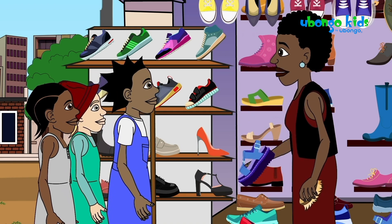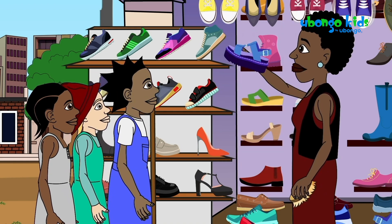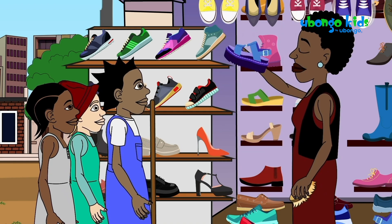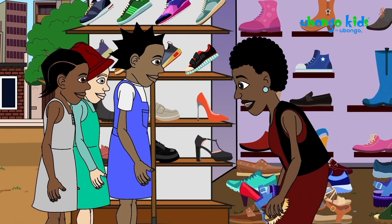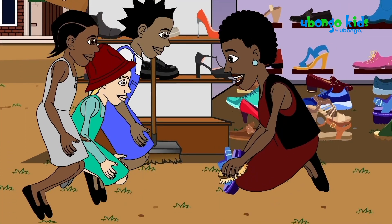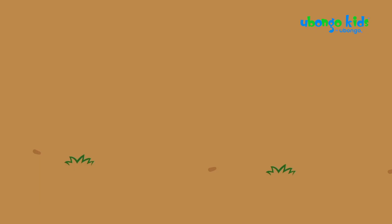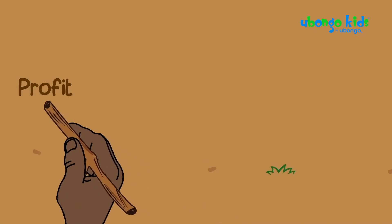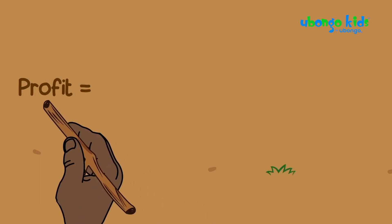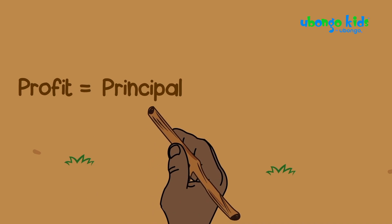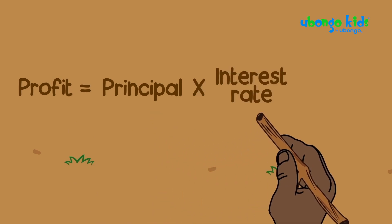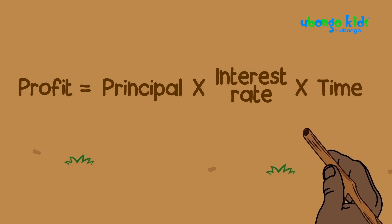When I was in school, a very long time ago, my teacher taught me this formula. Here, let me write it down on the ground. To calculate for profit, you must multiply your principal, which is the amount of money you're putting in the bank, by the interest rate.